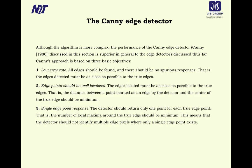The Canny edge detector is one of the premier edge detectors. Although the algorithm is more complex, the performance of the Canny edge detector (1986) is superior to detectors studied so far. The Canny approach is based on three objectives: one — low error rate, all edges should be found with no false responses, and detected edges must be as close as possible to the true edges; two — edge points should be well localized, minimizing the distance between a marked edge point and the true edge center; three — single edge point response, returning only one point per true edge, minimizing local maxima around the true edge.